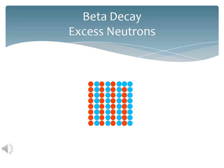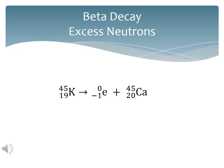In beta decay, the atom has too many neutrons to be stable, and so we convert a neutron into a proton and kick out an electron as a byproduct. In beta decay, the atomic number goes up by 1, but the mass number doesn't change. So potassium-45 becomes calcium-45.